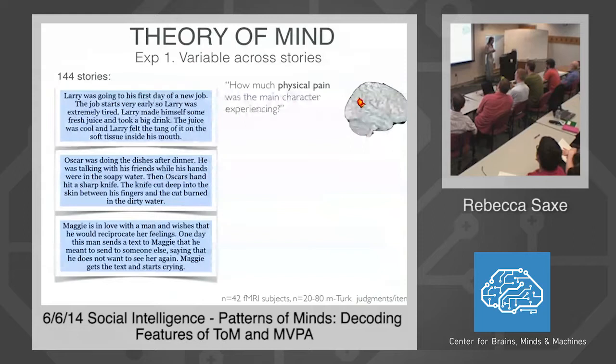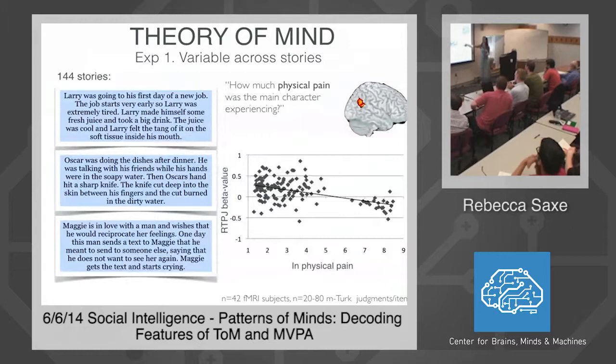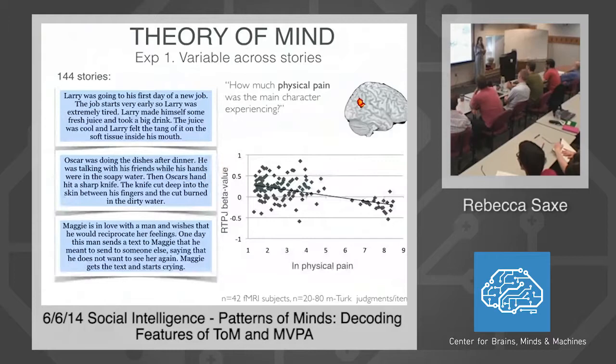For the right-hand side of the room's dimension — how much physical pain the character is experiencing — here are those data with each dot being a story. Stories rated as having more physical pain do not get more activity in the right TPJ. We can also use this as a regressor in a whole-brain analysis and find that brain regions actually involved in pain, like secondary sensory cortex and middle cingulate cortex, do respond most to those stories.